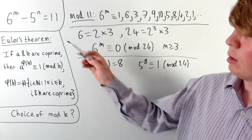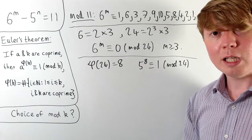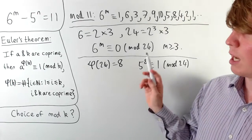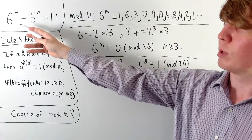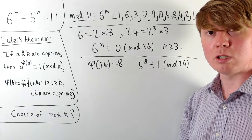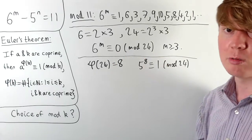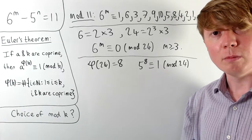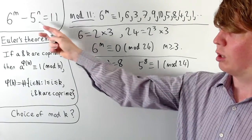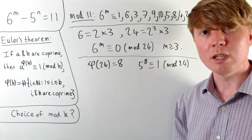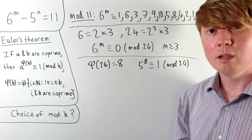To recap the strategy for choosing k: we can try modulo 5, 6, or 11 to eliminate a term. If that doesn't work, we can choose k sharing the exact same prime factors as one of the bases — for example, using only 2s and 3s in the prime factorisation ensures 6 to the m is eventually always equivalent to 0 modulo k. We also use Euler's theorem to choose k co-prime with the other base and with a small value of phi(k), limiting the number of possibilities for 5 to the n modulo k.